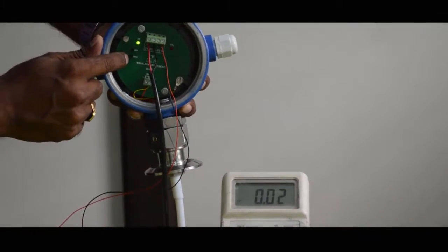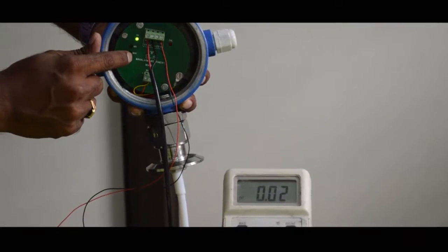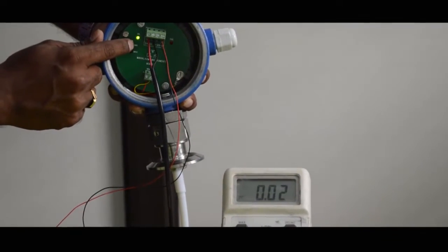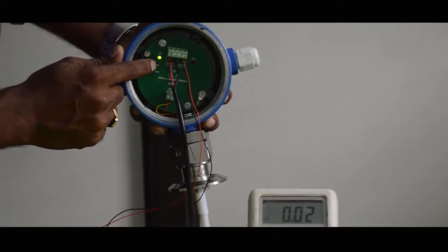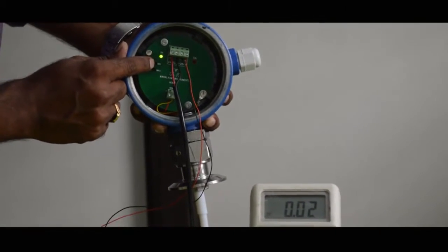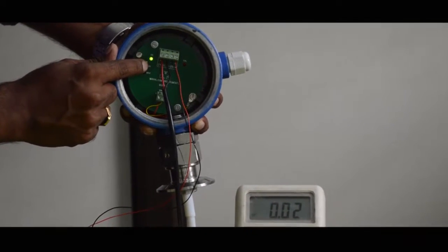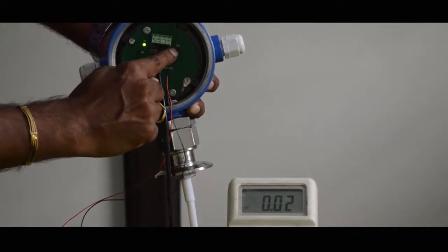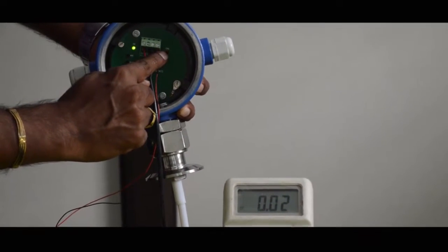You can see there are two push buttons here - minimum and maximum. First, I will press the minimum push button and hold it for three seconds. When I hold it for three seconds, you can see the calibration LED is blinking here.